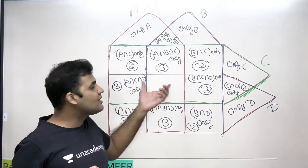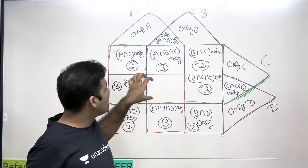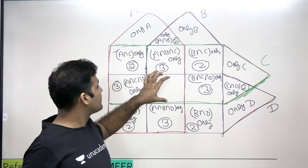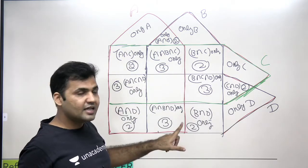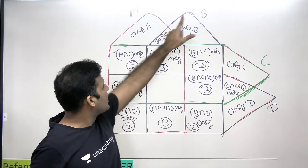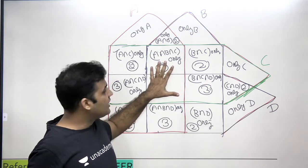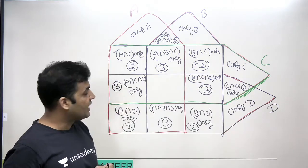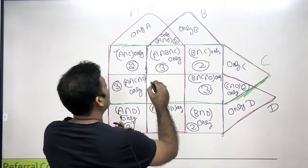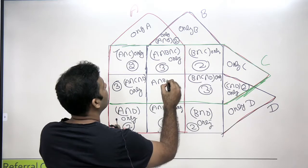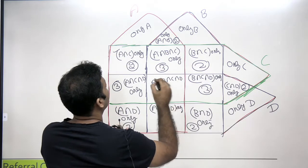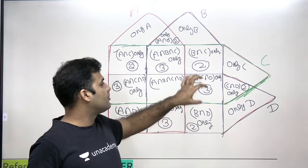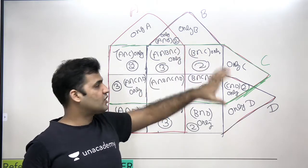There is one remaining cell. This particular cell comes under all four areas — the red area, the blue area, the green area, and the black area. That means it belongs to A intersection B intersection C intersection D. You should know which value is supposed to be placed where in this complete four-set Venn diagram.